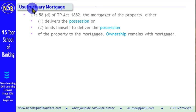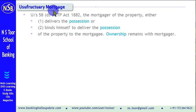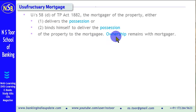So, in case of Usufructuary Mortgage, the Mortgager — the borrower — delivers the possession or binds himself to deliver the possession to the Mortgagee. This means in Usufructuary Mortgage, the possession is with the Mortgagee. But ownership remains with the Mortgager.